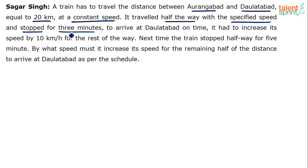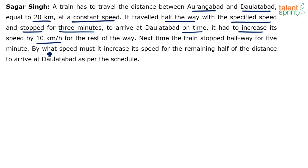But then it stopped for 3 minutes. Obviously, if the train has stopped for 3 minutes, it has to run at a faster speed so that it can arrive at Dalatabad on time. It had to increase its speed by 10 km per hour for the rest of the way. The rest of the way here is the other half, 10 km.